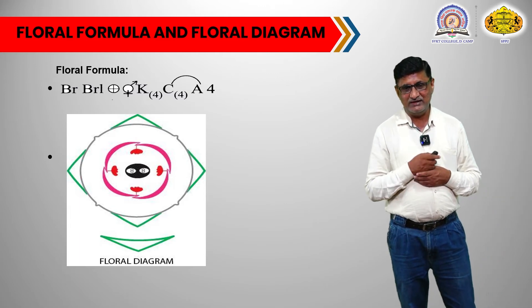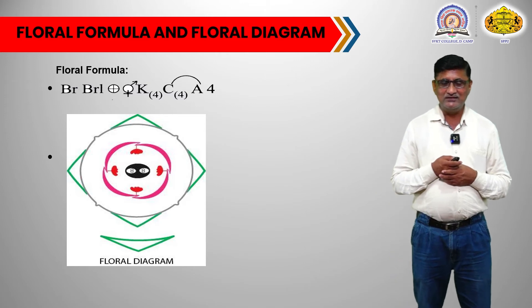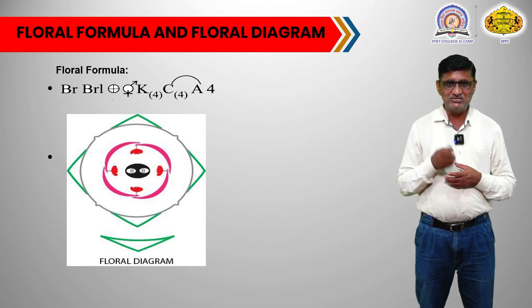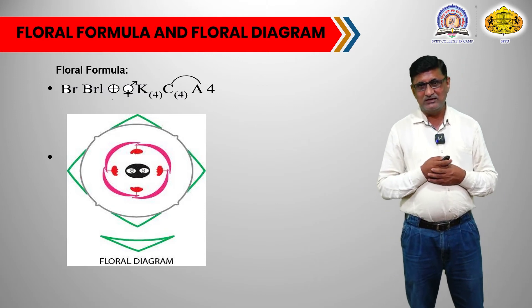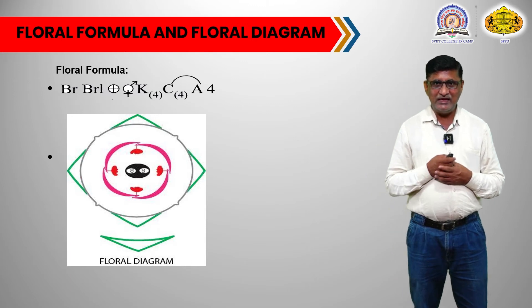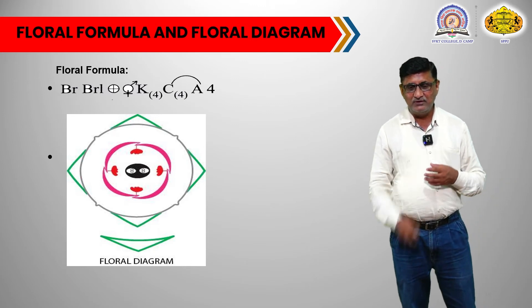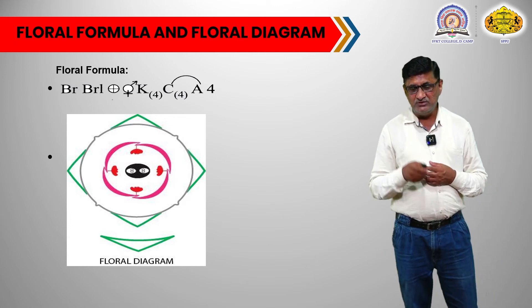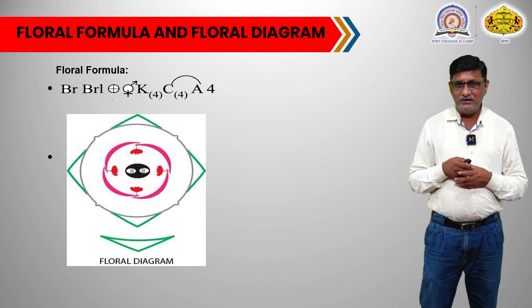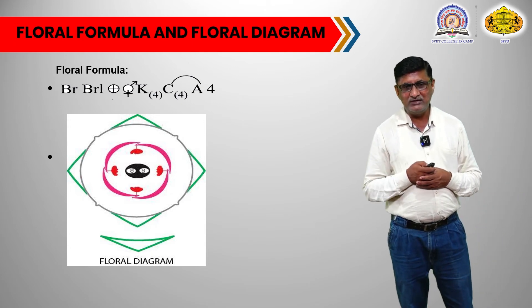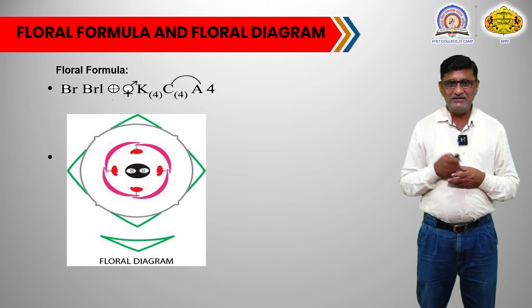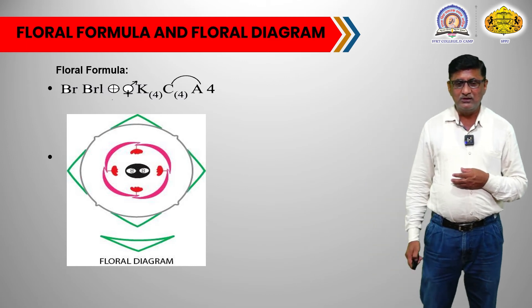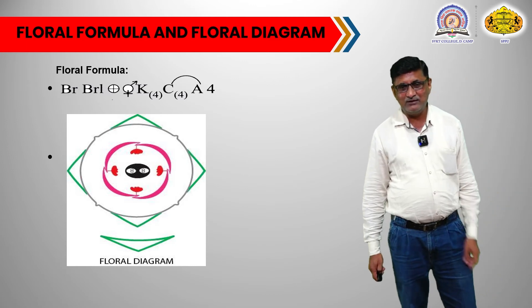So four stamens and they are epipetalous. At the center there is the gynoecium, showing bilocular or bicarpellary syncarpous inferior gynoecium. The ovules are present on axile placentation, and the placenta in the ovary is T-shaped. At the base of the floral diagram there is one appendage indicating the bracteate nature of the flower of the family Rubiaceae. So these are the floral formula and floral diagram of the family Rubiaceae.